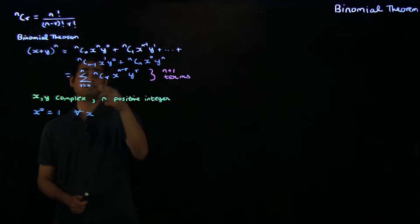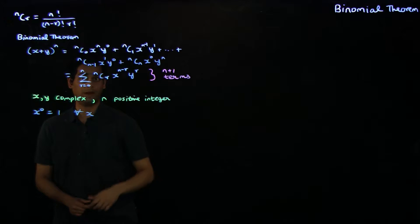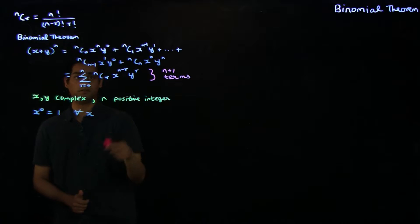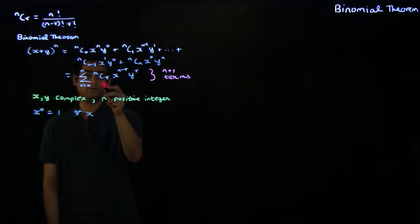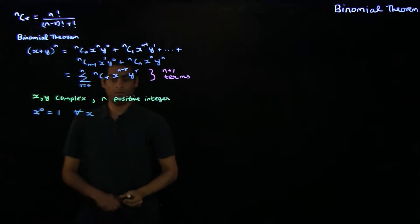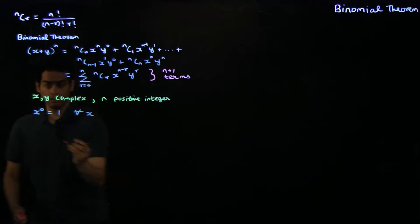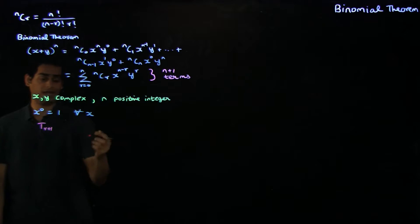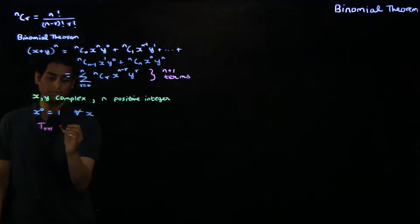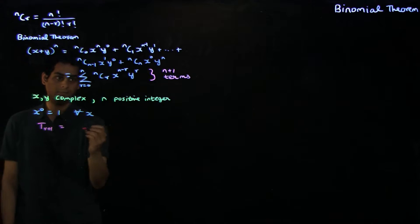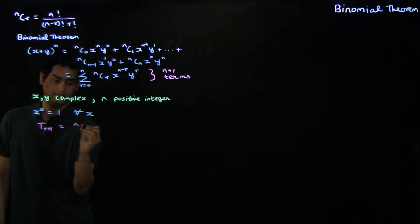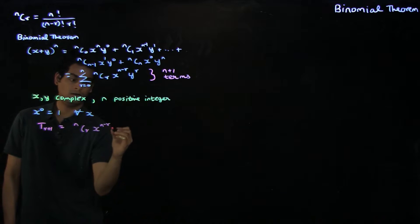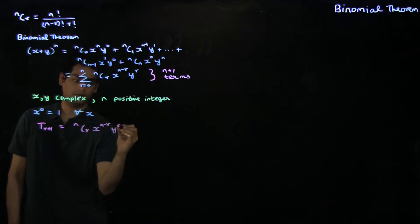You notice that there is a pattern to the terms in the binomial theorem, and that is well captured by the general term. In general, the r plus 1 term in the expansion of x plus y to the n can be written as nCr times x to the n minus r times y to the r.